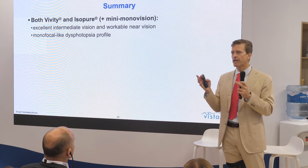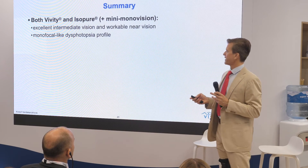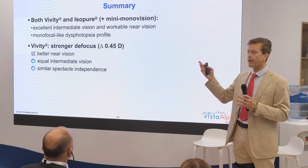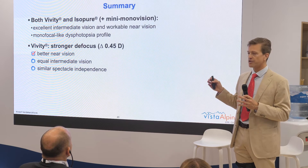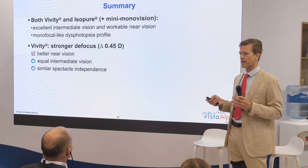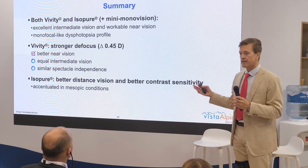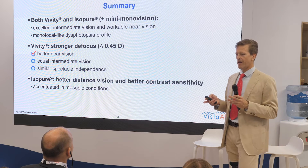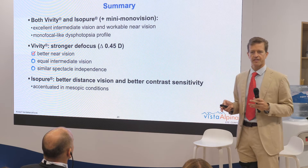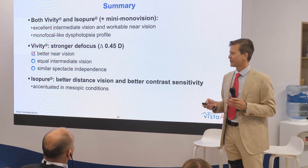In summary, for both lenses combined with mini monovision of 0.5 diopters, we obtained excellent intermediate vision and a workable near vision, without a cost to dysphotopsia — we had a monofocal dysphotopsia profile. In terms of differences between the two lenses: for vivity, we noted a broader defocus of 0.45 diopters on the defocus curve, translating into better near vision, while intermediate vision and spectacle independence were identical between the two lenses. For isopure, we observed clearly better distance vision and better contrast sensitivity, with the difference accentuated under mesopic conditions.